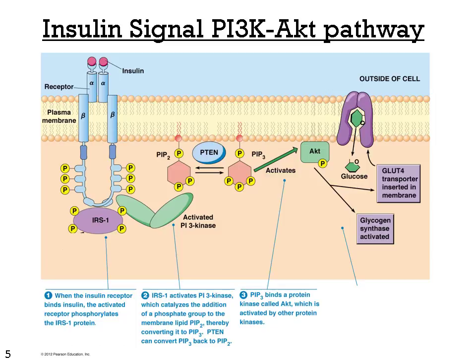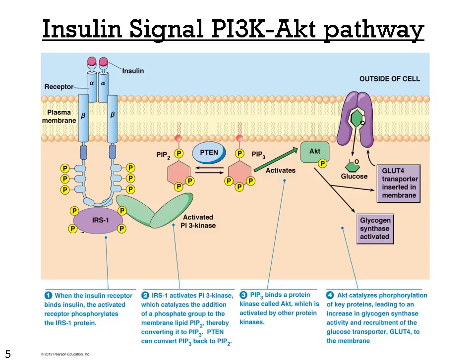PIP3 then binds a protein kinase called AKT, which is activated by other protein kinases. AKT then catalyzes the phosphorylation of key proteins, leading to an increase in glycogen synthase activity and recruitment of the glucose transporter GLUT4 to the membrane.